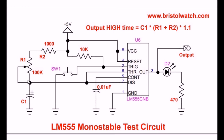For instance, if I adjusted R1 to its maximum giving a total of 101,000 ohms, and C1 was 1,000 microfarads, D2's on time would be something like 111 seconds. That's all there is to it. You push the switch, pin 3 goes high, D2 comes on, and the turn-off time is based on the values of R1 and R2 times C1 times 1.1.